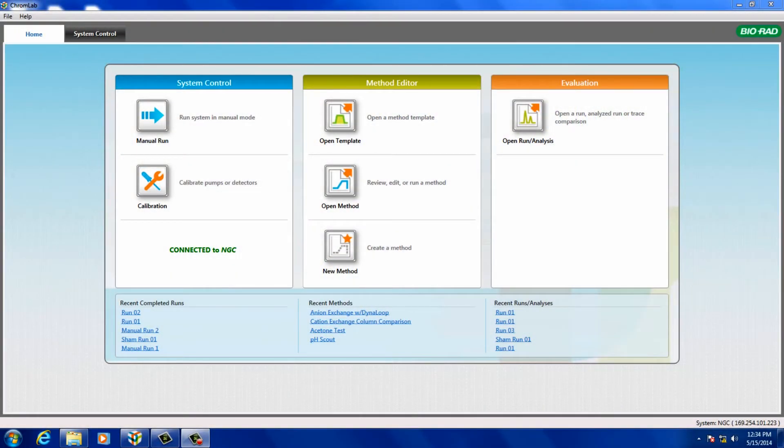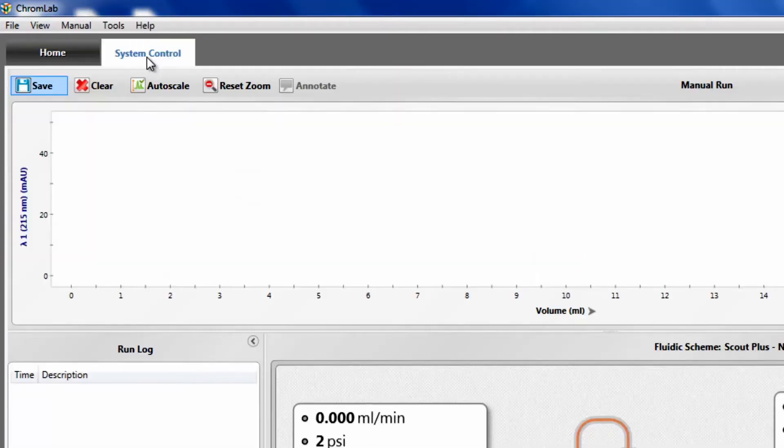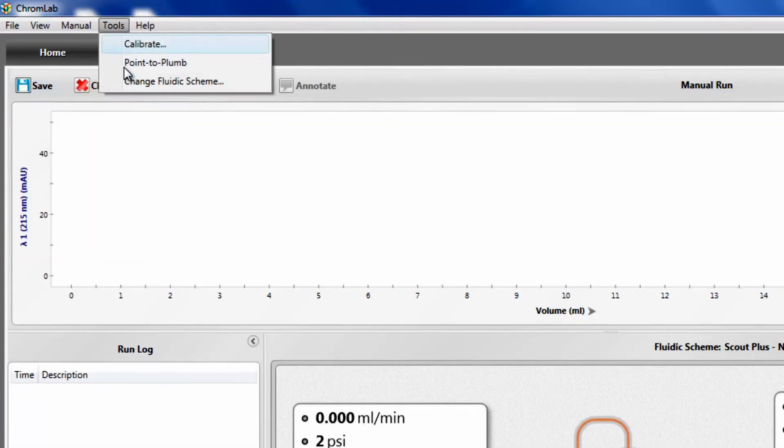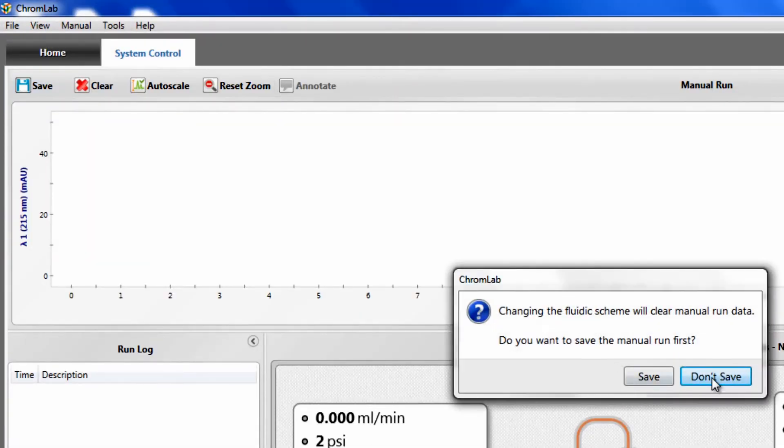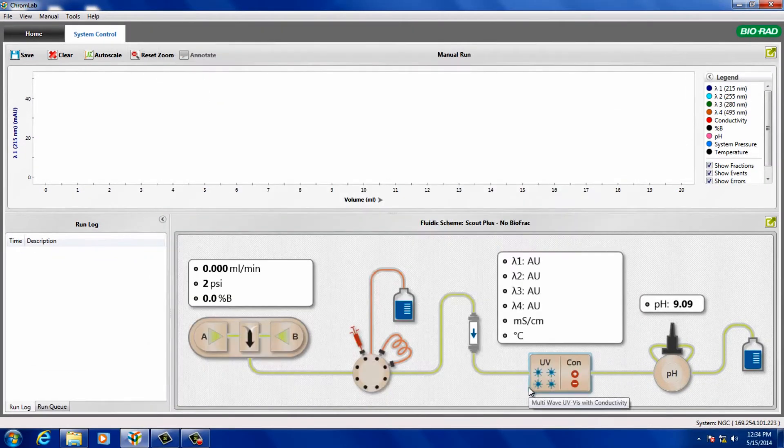Next, use the Chrome Lab software to activate your pH valve module. Under System Control, Change Fluidic Scheme, select or create a fluidic scheme that includes the pH valve in the flow path.